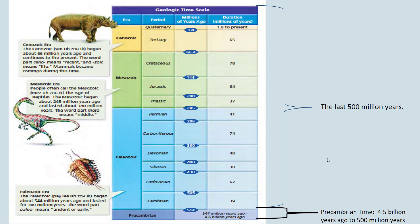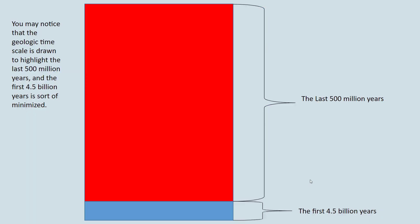Notice what I have bracketed here. This first bracket covers the last 500 million years, which is a lot of time, but the rest — the whole of the remaining time — is compressed into a small area. Many geologic time scales are drawn this way: we highlight the last 500 million years and minimize that first four billion years.